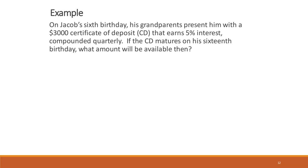So on Jacob's 6th birthday, his grandparents sent him a $30,000 certificate of deposit that earns 5% interest, compounded quarterly. If the CD matures on his 16th birthday, what amount will be available then? So our principal in this case is 3,000.